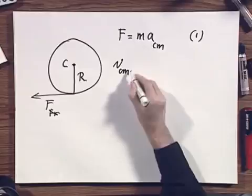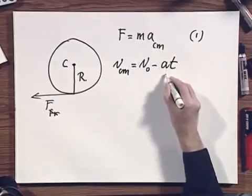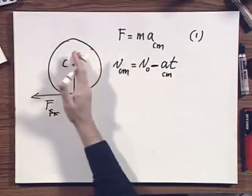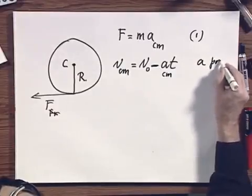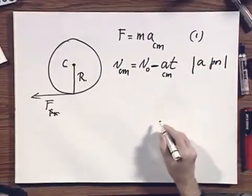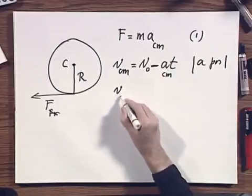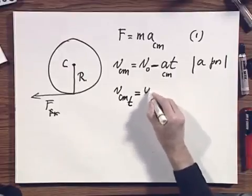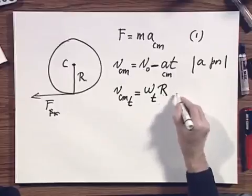V of the center of mass must be V0 minus AT, which is the same A. And notice this minus sign already takes into account that the wheel is going to be decelerated. In other words, A will be positive because the minus sign is already built in. Then I have V center of mass at any moment in time that I am in pure roll must be omega T times R. That's my pure roll condition.